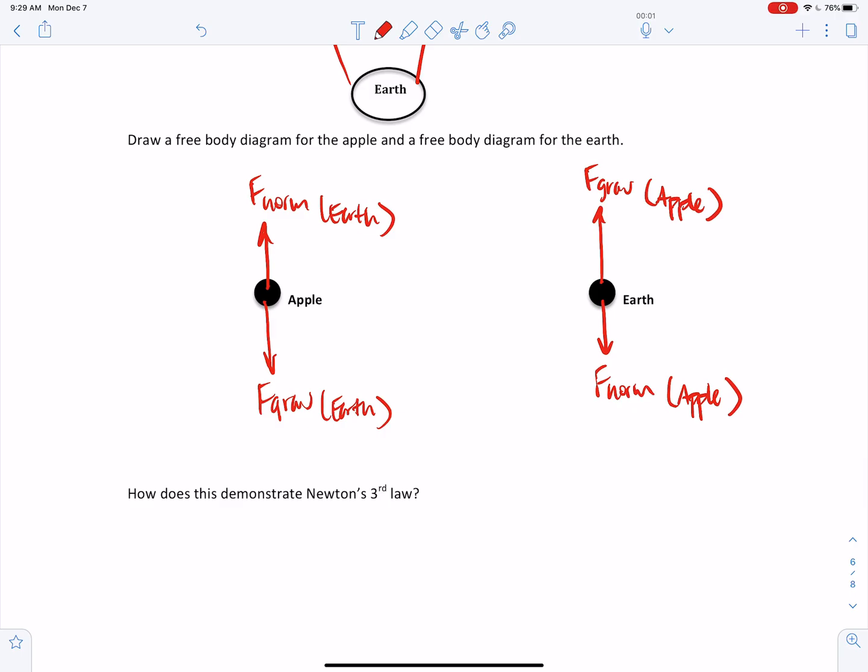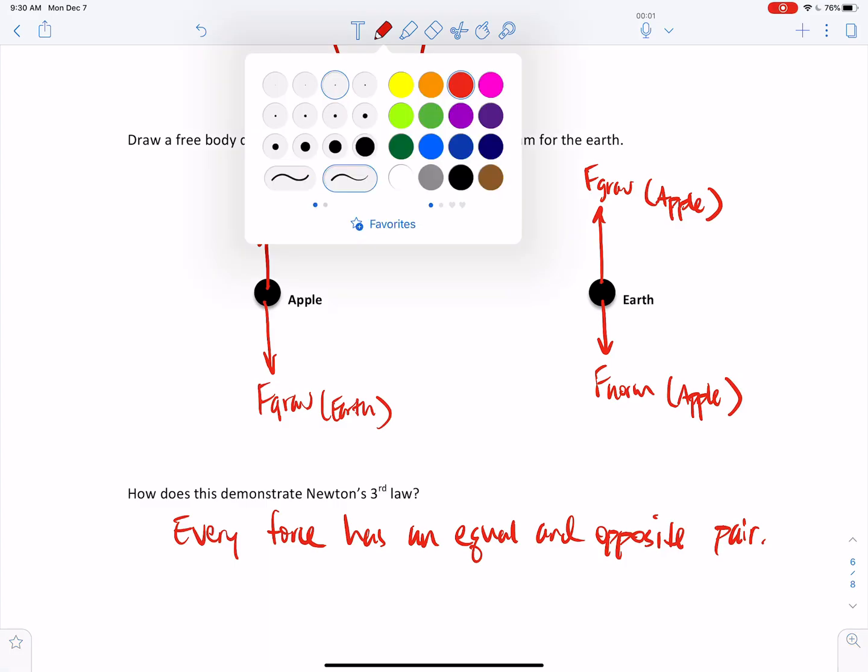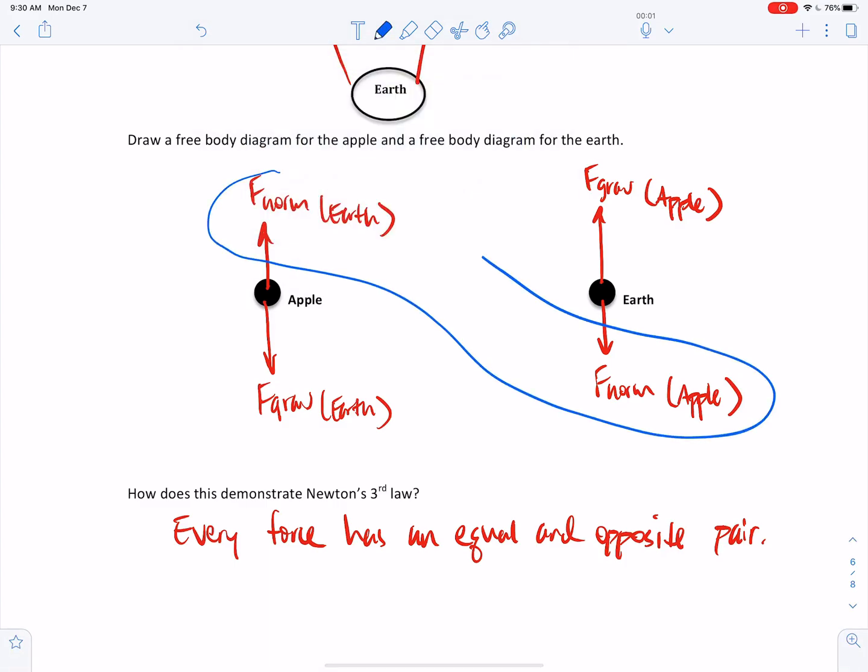And how does this demonstrate Newton's third law? Well, again, for every force, there's a paired force, right? So every force has an equal and opposite pair. Every force has an equal and opposite pair. And what I mean by that is these are force pairs here. And these are force pairs here. Okay? They're paired up.